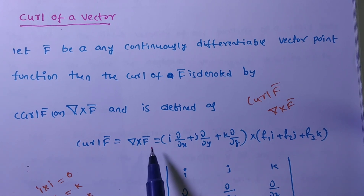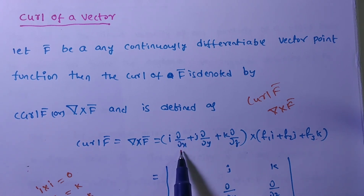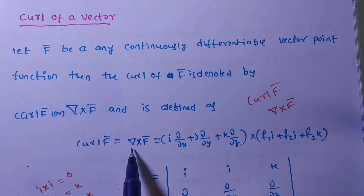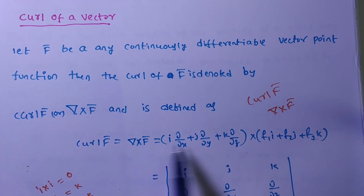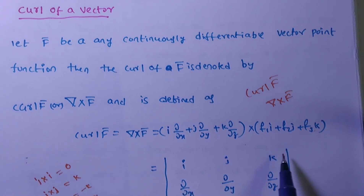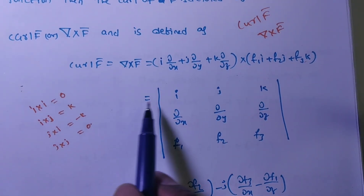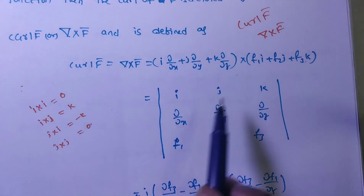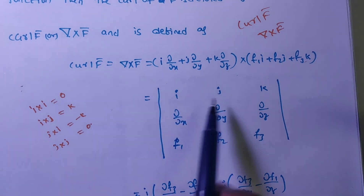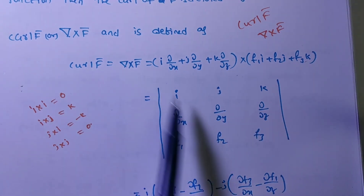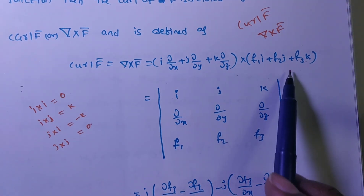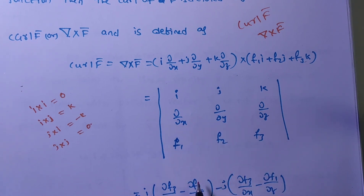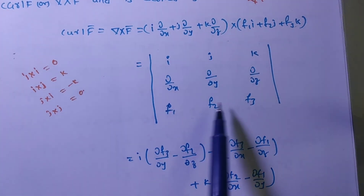Curl f̄ is defined as del cross f̄, where del is the vector differential operator: i ∂/∂x + j ∂/∂y + k ∂/∂z, and f̄ = f₁i + f₂j + f₃k is the vector point function. To find this cross product, we use a determinant with i, j, k in the first row; the del coefficients ∂/∂x, ∂/∂y, ∂/∂z in the second row; and f₁, f₂, f₃ in the third row. This determinant gives curl f̄.